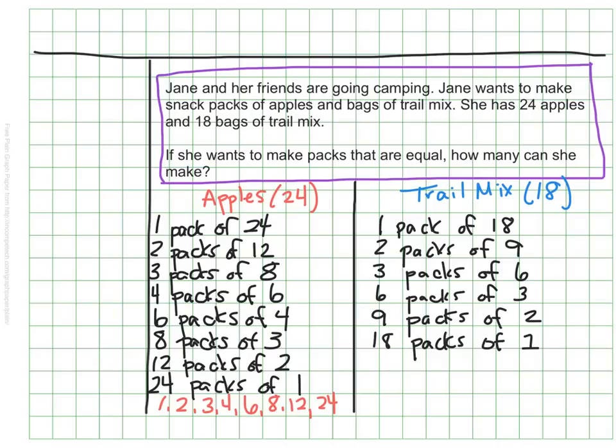Again, do you notice that these are all the factors of 18? If I want to split the trail mix up evenly among all of the friends, or if Jane wants to in this case, we need to look at the factors. We can split it into one big bag, two, three, six, nine, or 18 small packs.